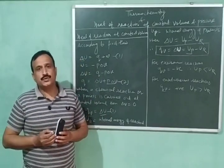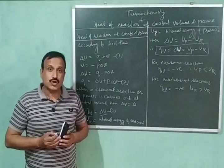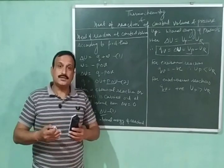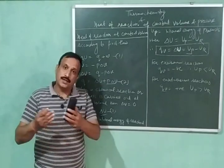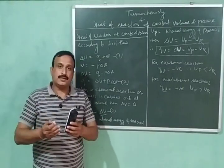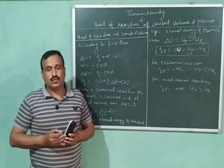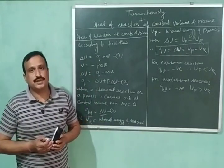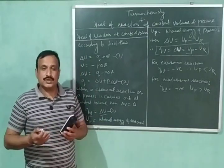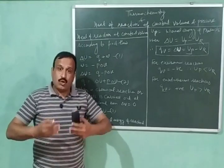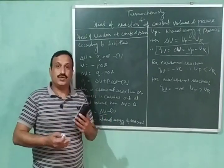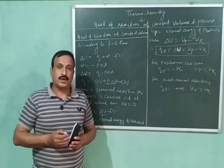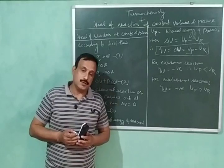Reactions which proceed with the evolution of heat are called exothermic reactions, and in these reactions heat is given out from the system to the surroundings — here the heat is given a negative sign. Whereas reactions which involve absorption of heat are called endothermic reactions, where heat is absorbed by the system from the surroundings, and here the heat absorbed is given a positive sign.